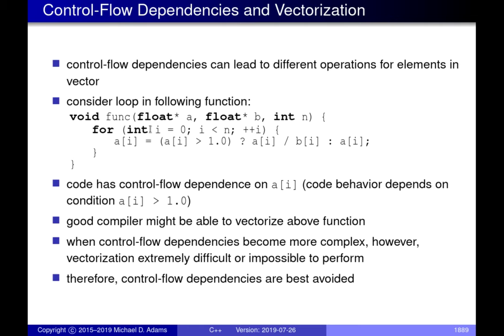This loop here has a control flow dependency. Inside the body of the loop we have something that's effectively an if statement — a ternary operator. Depending on whether the condition is true or not, either the expression before the colon or the expression after the colon will be evaluated. So depending on what A[i] equals, you get two different types of behavior inside the loop, which introduces a control flow dependency. These types of dependencies are sometimes quite tricky for the compiler to handle when vectorizing.